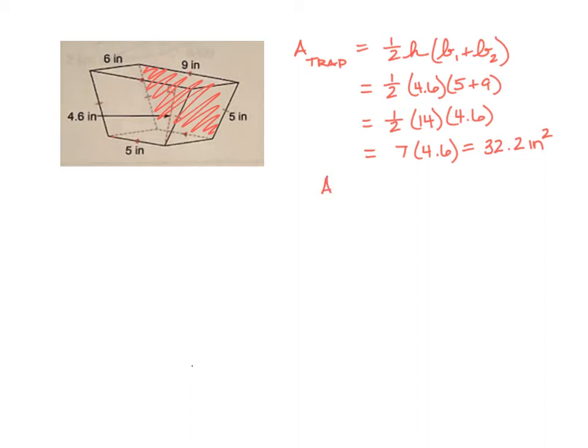So for the total trapezoidal area, because there are two faces that have those same dimensions and therefore that same area, we're going to do 2 times 32.2, and that's going to give us a total of 64.4 square inches for our area for the trapezoids, those two faces.